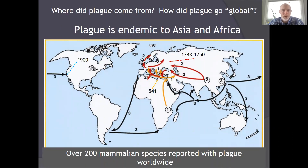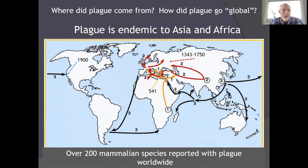A question I get a lot is where did plague come from and how did it become such a global pathogen? The map here shows us some hypothesized routes of plague transmission across the globe, starting from its endemic area in Asia and Africa.